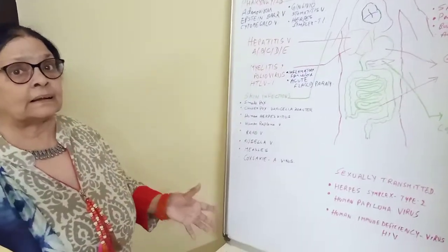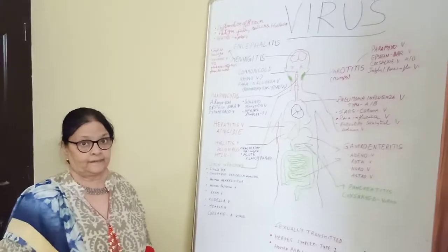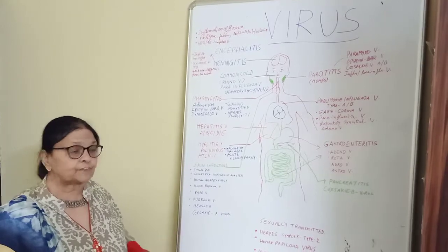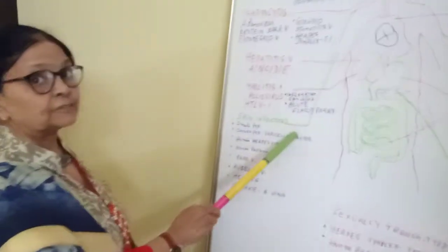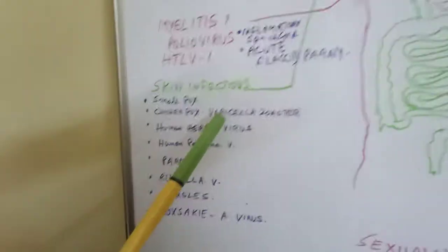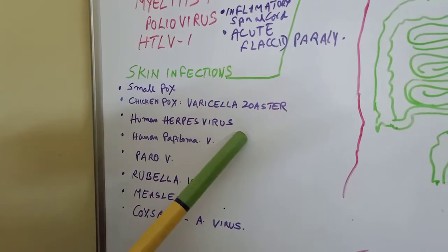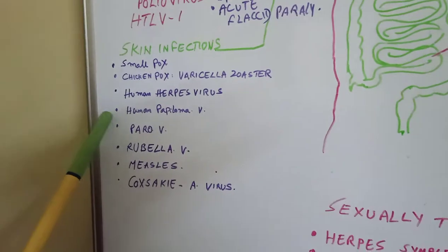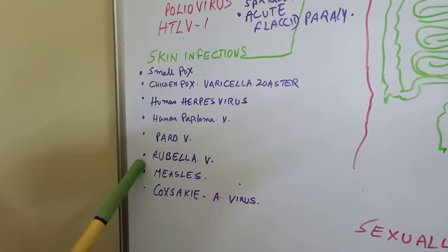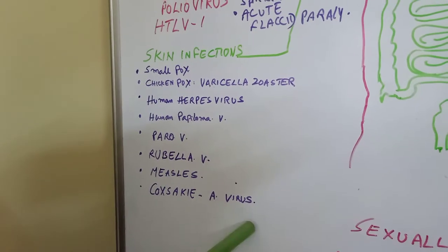Overall, the largest organ covering the body is the skin. The skin is also not spared by viruses. Different kinds of skin viral infections include smallpox, chickenpox caused by varicella zoster virus, human herpes virus causing herpes, human papilloma virus, parvovirus, rubella virus, measles, and Coxsackievirus type A.